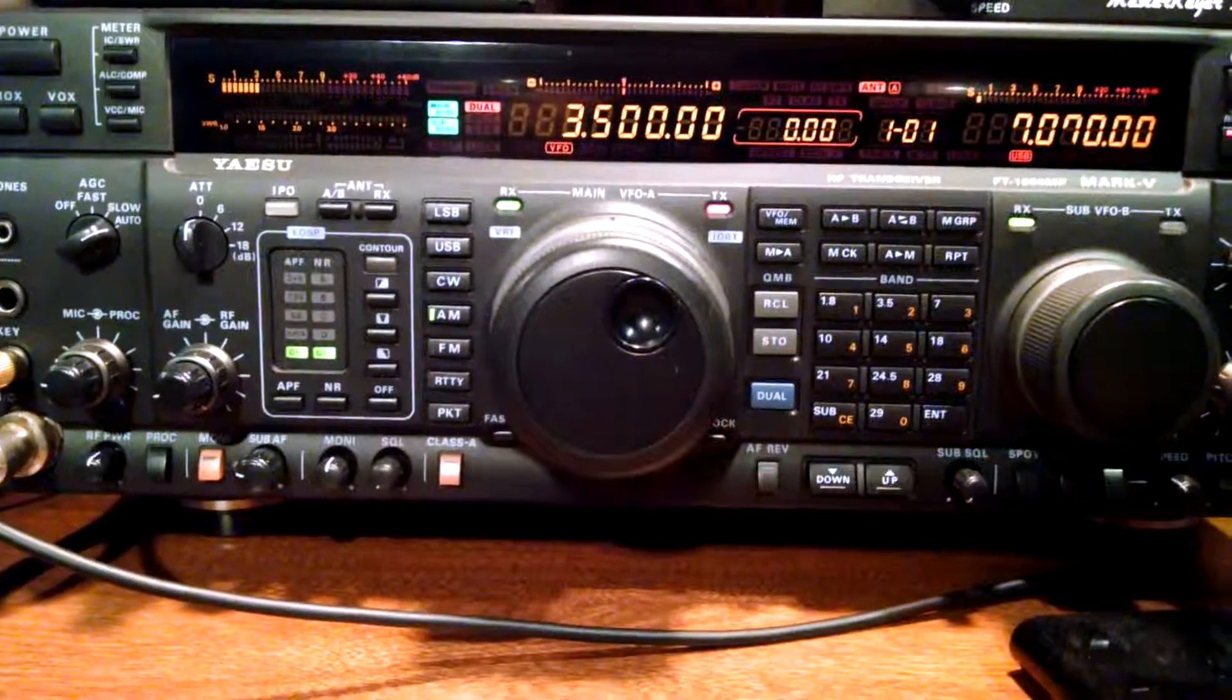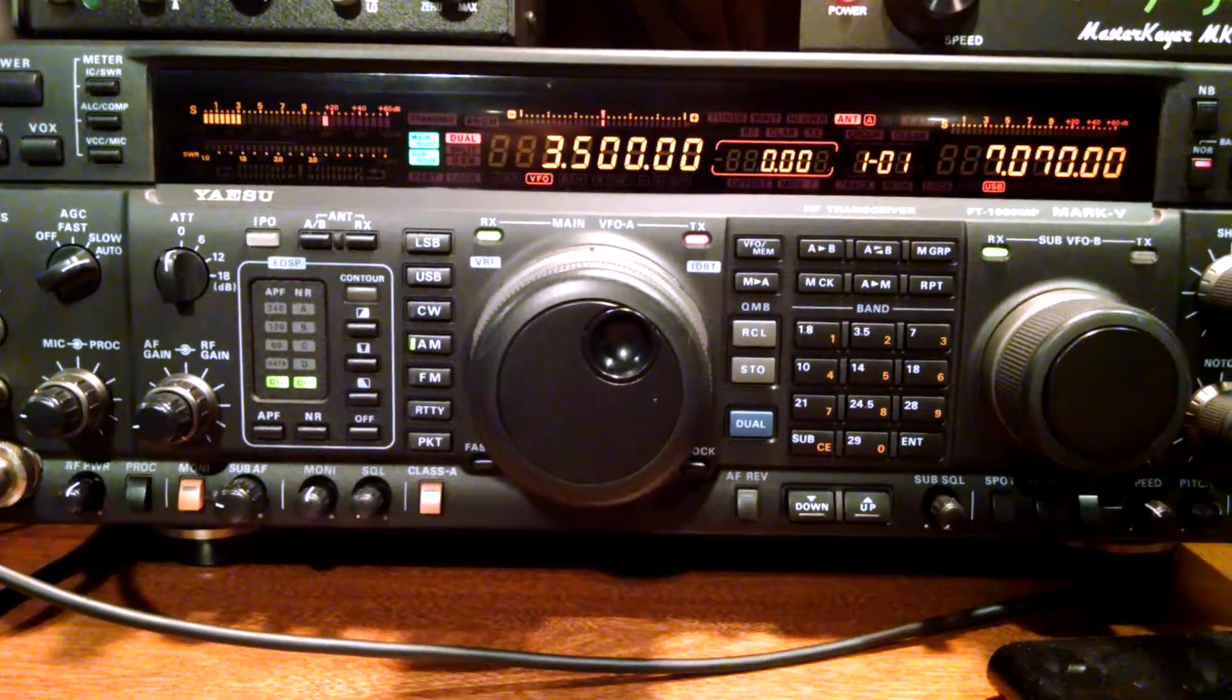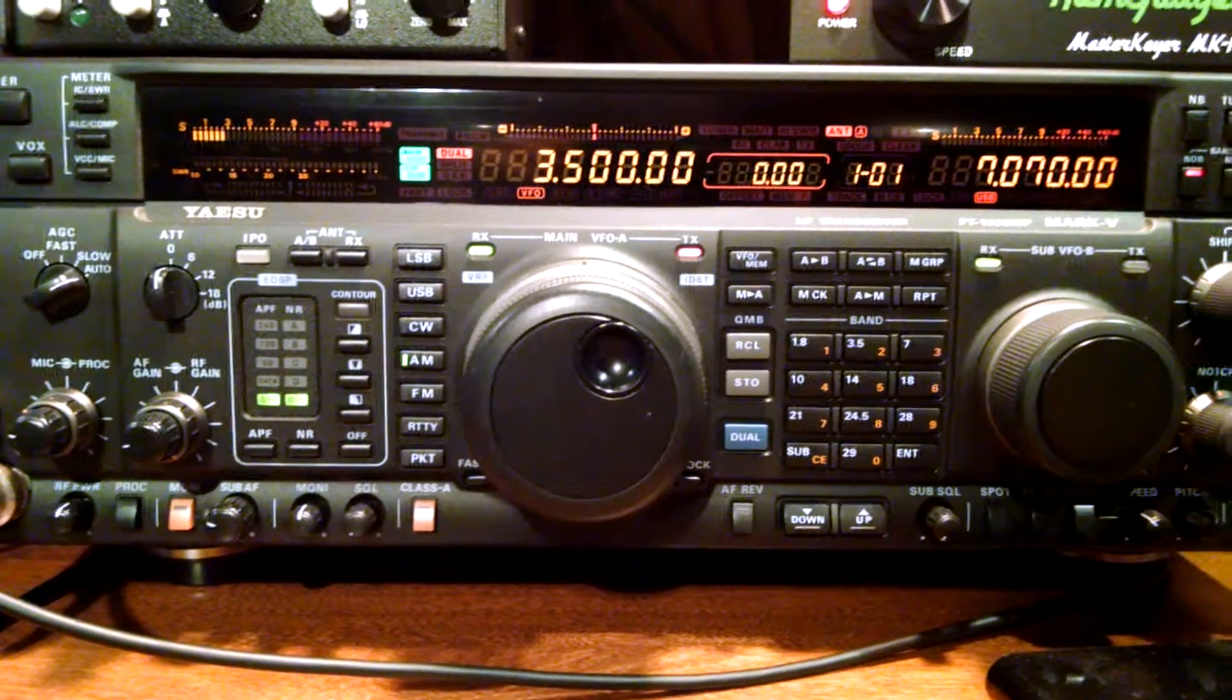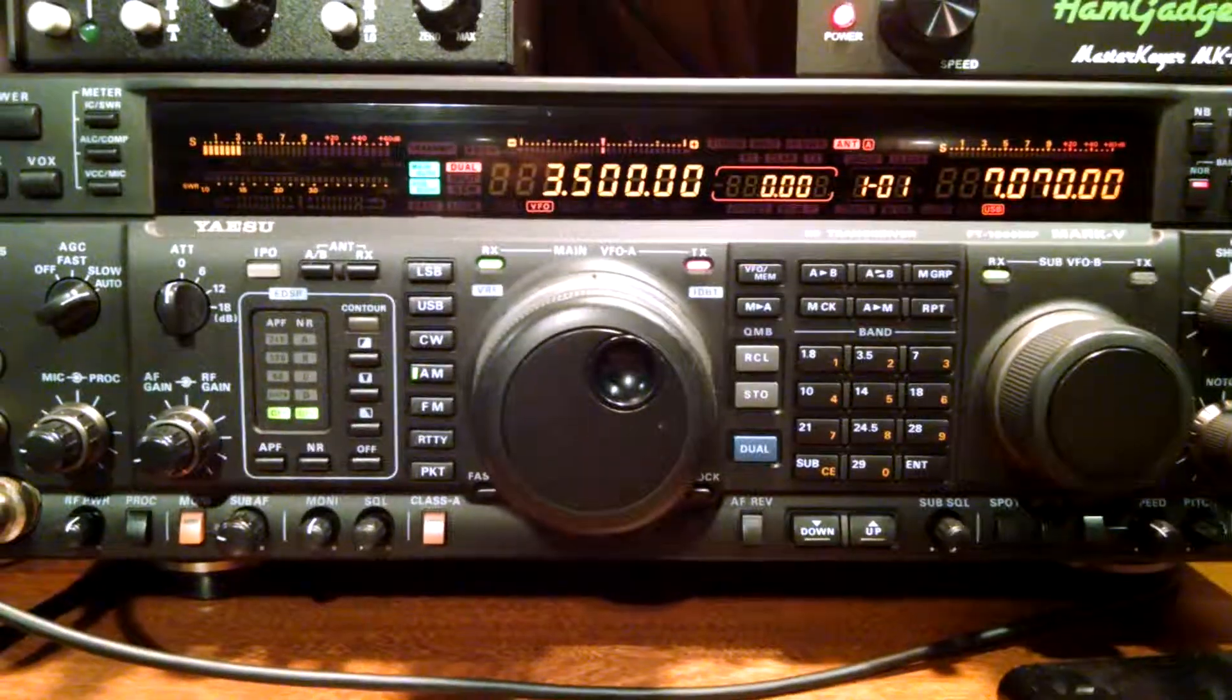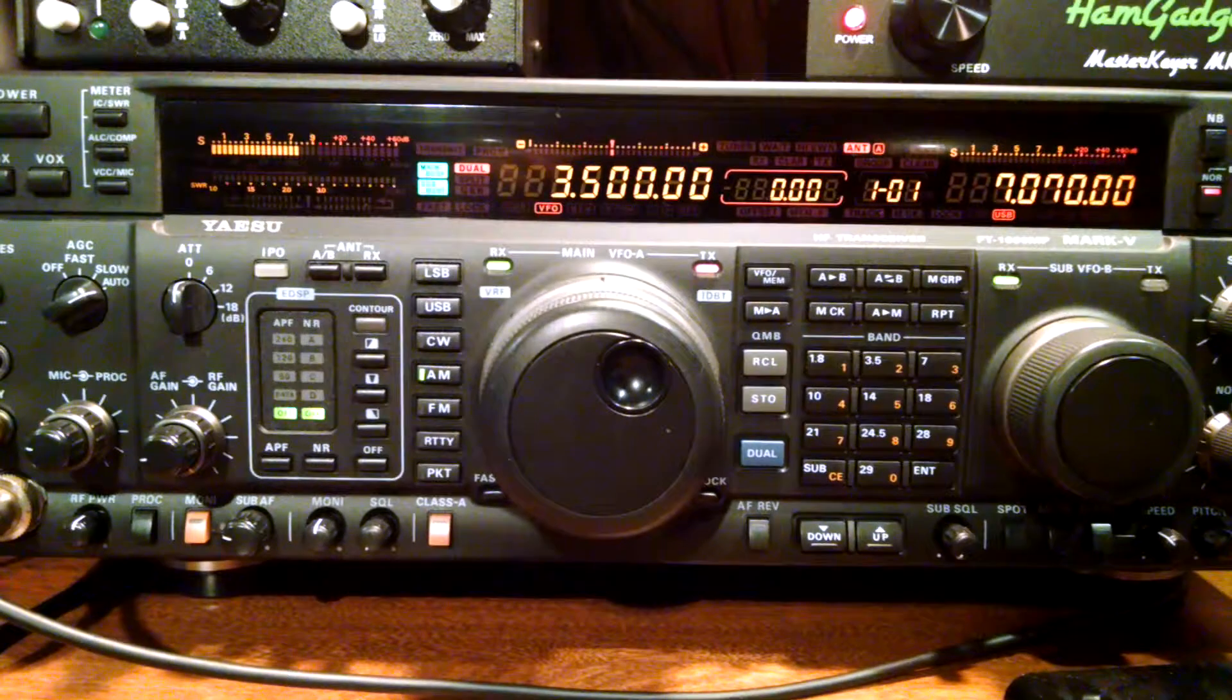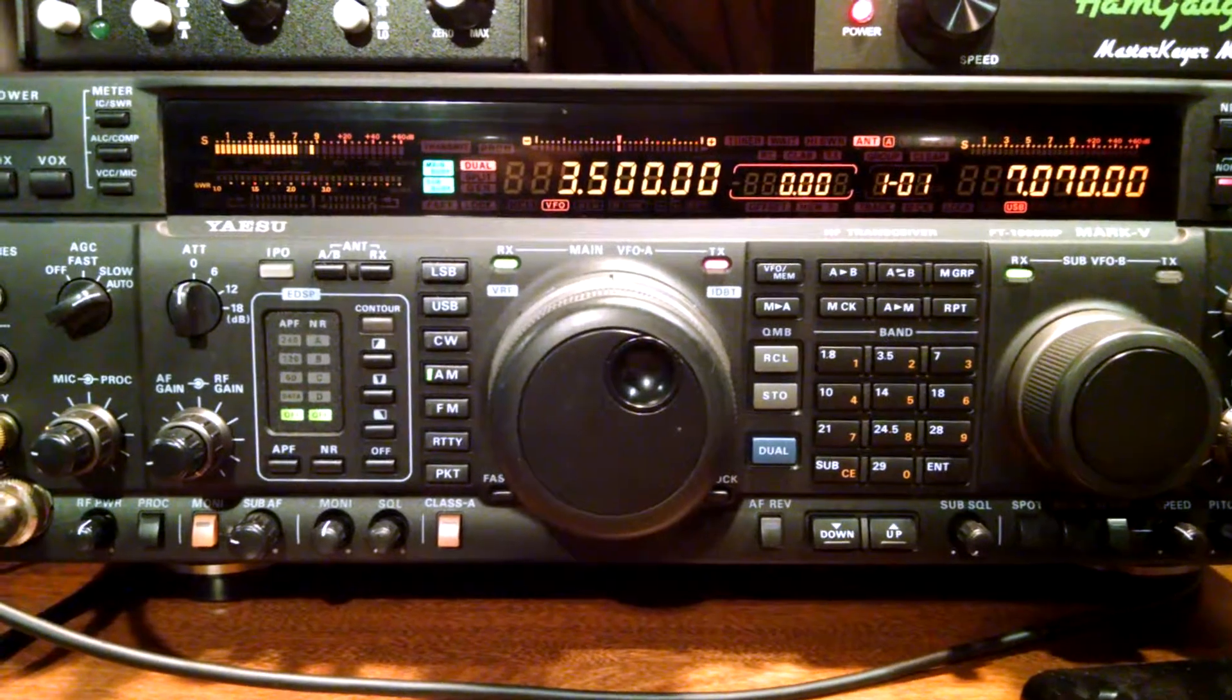The receiver is a Yaesu FT-1000 Mark V tuned to the low end of 80 meters. The antenna is a quarter-wave 80-meter vertical on AM mode with the widest filter setting.